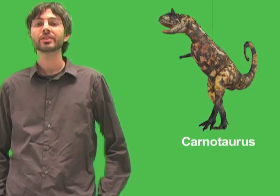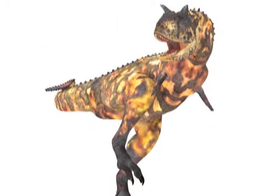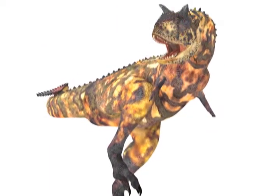It had a variety of distinctive physical traits. Most famously, it had a pair of stubby, bull-like horns over the eyes. In fact, the name Carnotaurus means meat-eating bull.